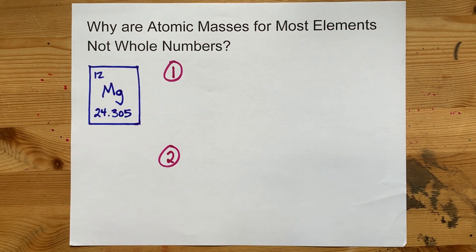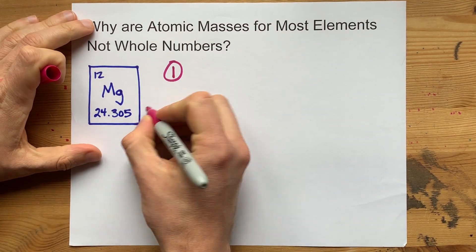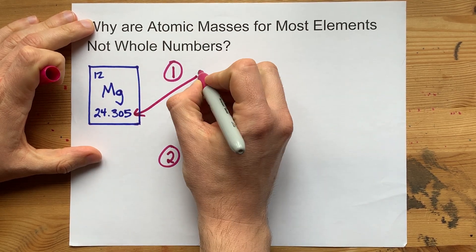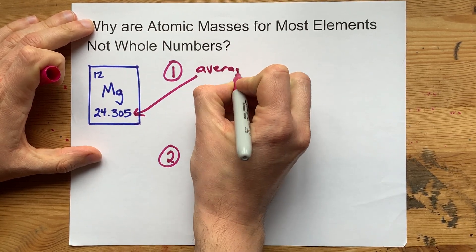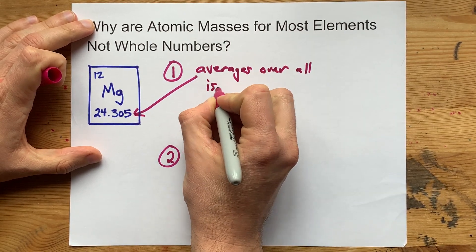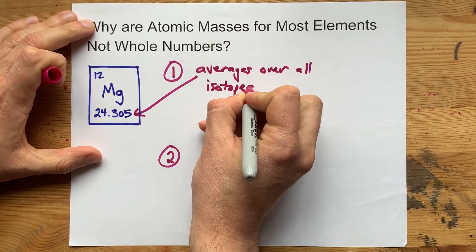There's two things you need to consider here. Number one, the masses on the periodic table happen to be averages over all the isotopes of that atom.